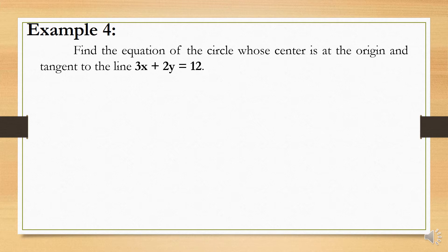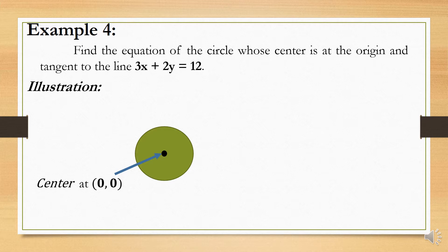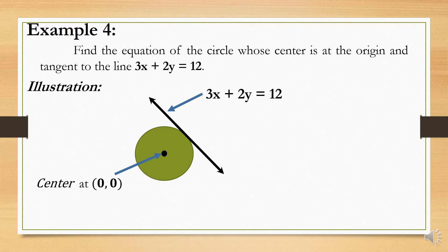Before we find the equation of the circle, let us illustrate the given problem. We have a circle with the center at the point of origin. Therefore, the coordinates of the center are 0 and 0. A line tangent to the circle is 3x plus 2y is equal to 12, and the point of intersection of the circle and the line is what we call point of tangent C.